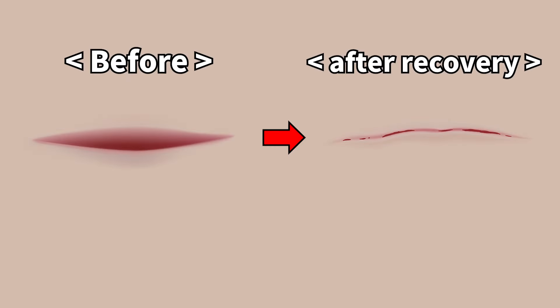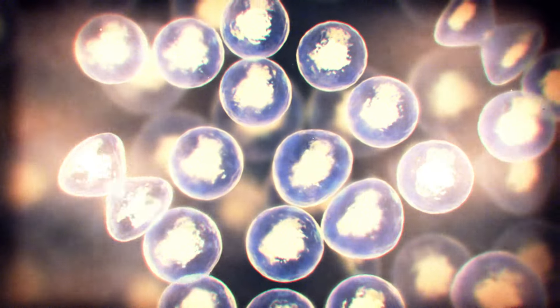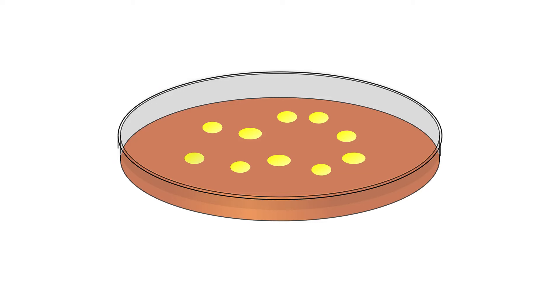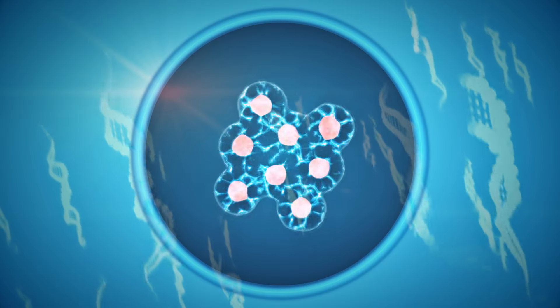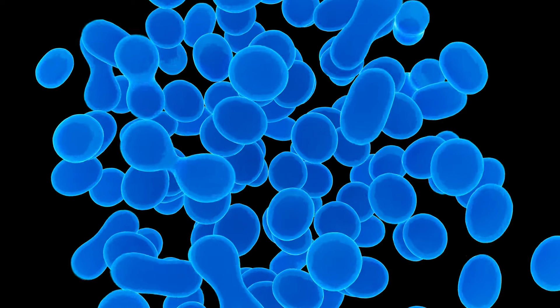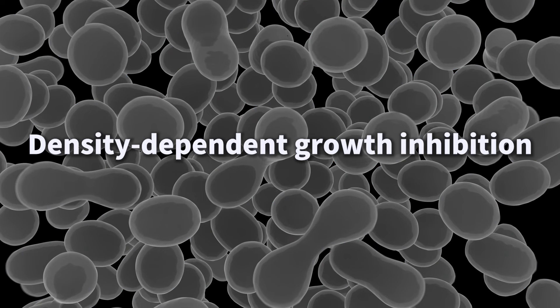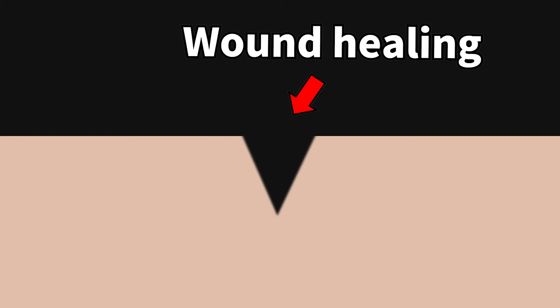Isn't it fascinating that cells only cover the wound area? This happens because of something called density-dependent growth inhibition. When cells are grown in a lab dish, they keep dividing and multiplying. But once the dish becomes full, the cells slow down and eventually stop dividing. This is how cells naturally regulate their growth based on how crowded they are. Thanks to this amazing ability, only the damaged areas of our skin get repaired.